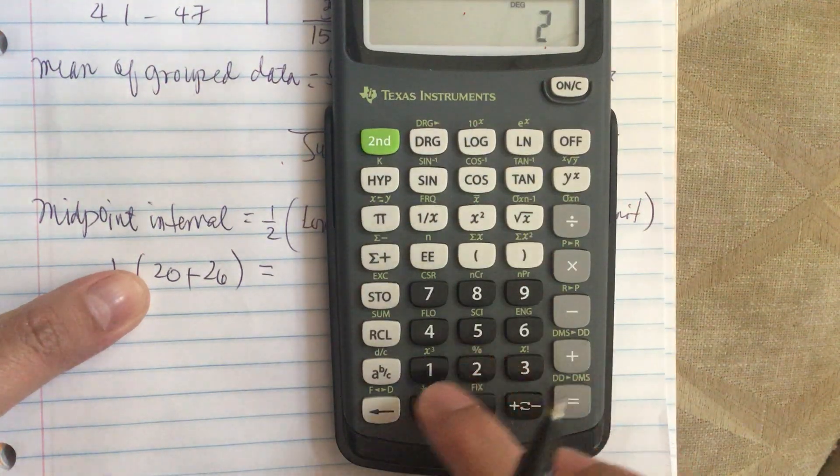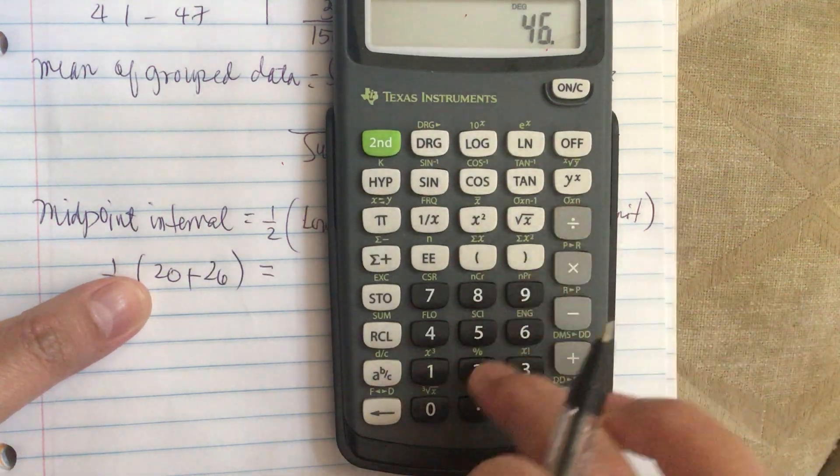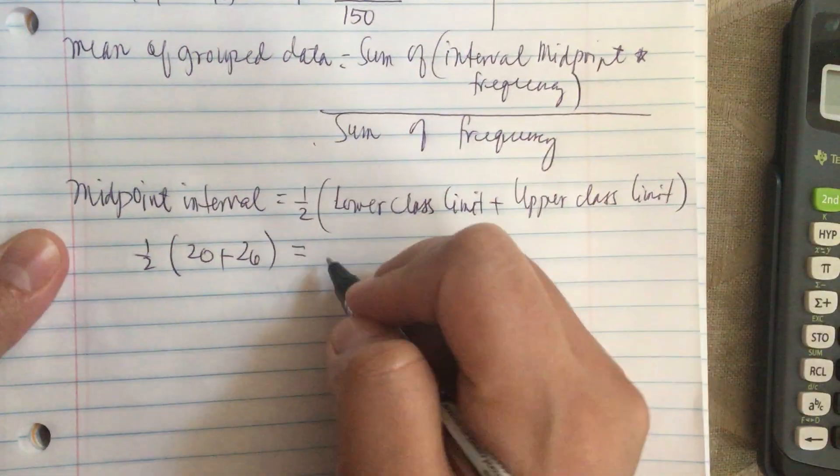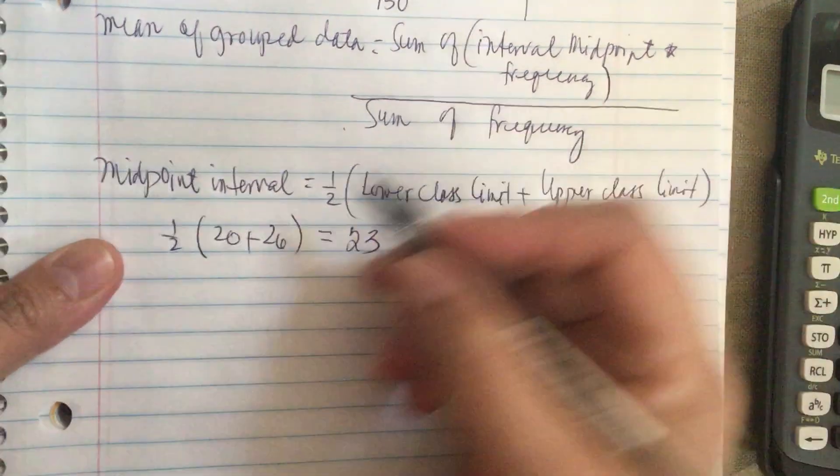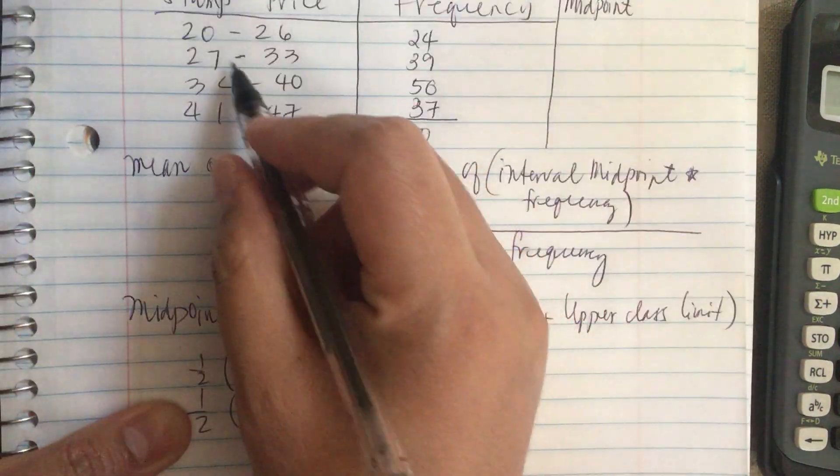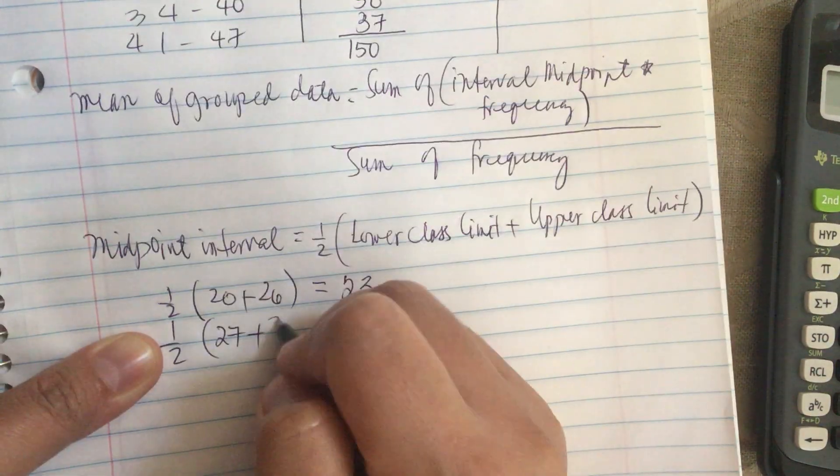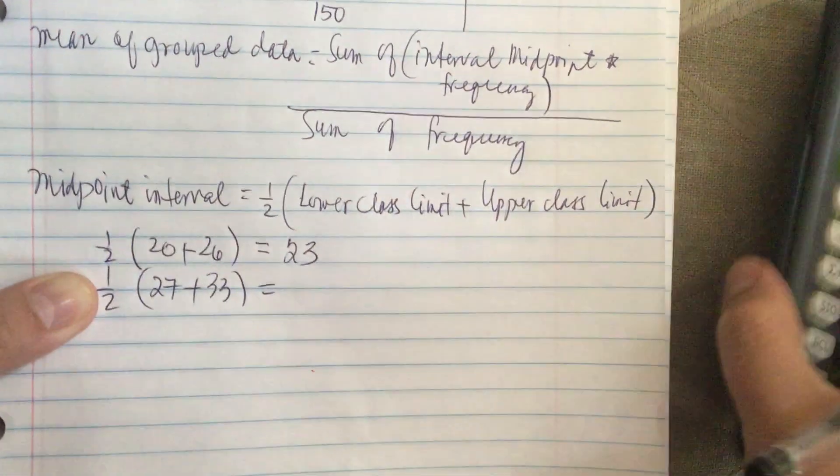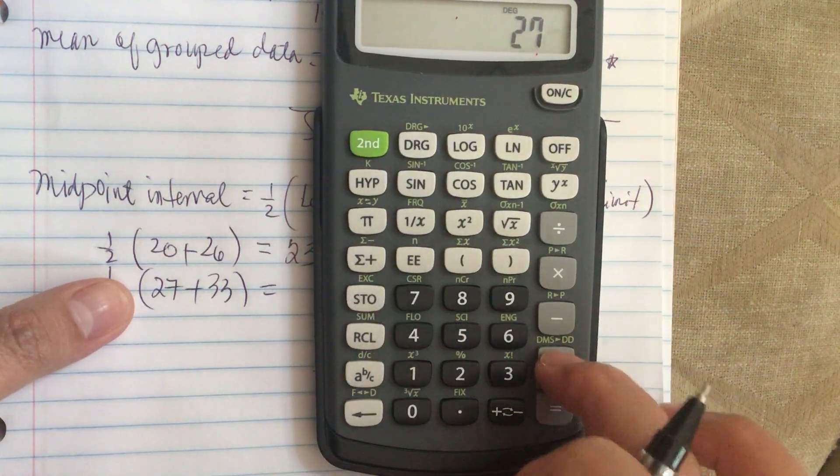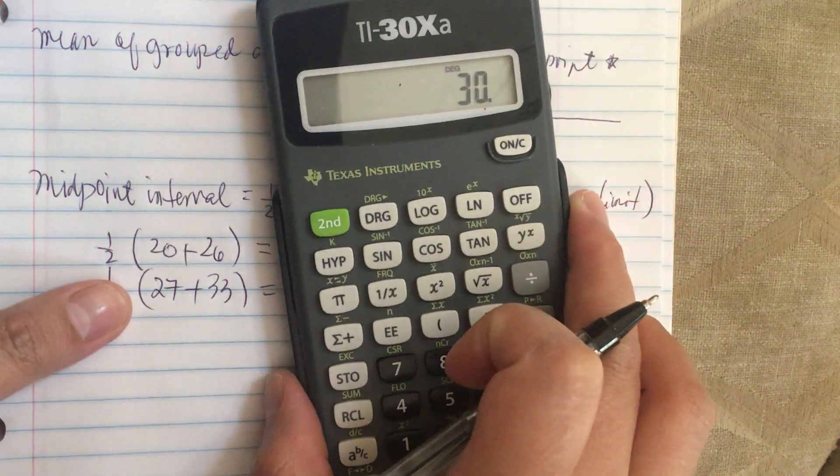Let's do it again. The next one, we have one half times 27 plus 33. So 27 plus 33 divided by 2 is equal to 30.